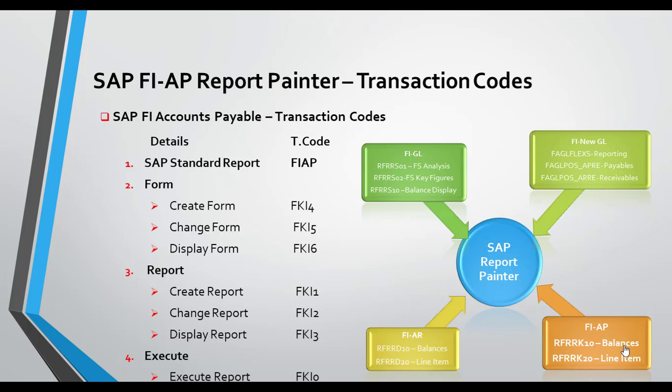In this session I am going to show you the transaction codes relating to FI Accounts Payable. If you want to view all the standard reports, you need to go to transaction code FIAP. In case of AR it's FIAR, in case of GL it's FIGL, and in case of fixed assets it's FIAA. The system will show you the menu path for the standard reports, so you can access all SAP standard reports using these transaction codes without needing to memorize them for each sub-module of financial accounting.